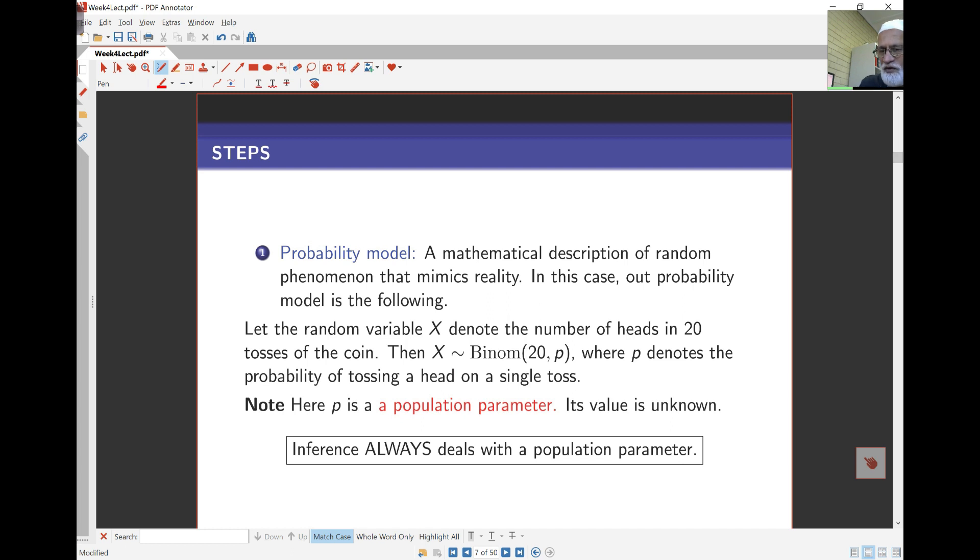A probability model is nothing more than a mathematical description of the random phenomena that mimics reality. In this case, if I let random variable X denote the number of heads in 20 tosses, then X is Binomial(20, P). Now P here denotes the probability of heads, which is unknown to me because the idea here is I want to decide if the coin is fair or not. If the coin is fair, P is 0.5. I don't know that yet. I'm going to assess the value of P. Now P here is what we call a population parameter. Its value is unknown. Inference always deals with population parameters.